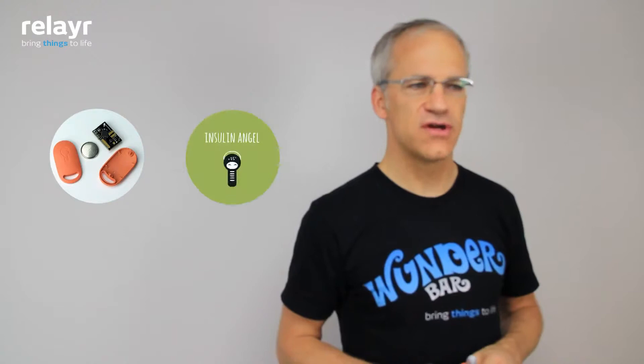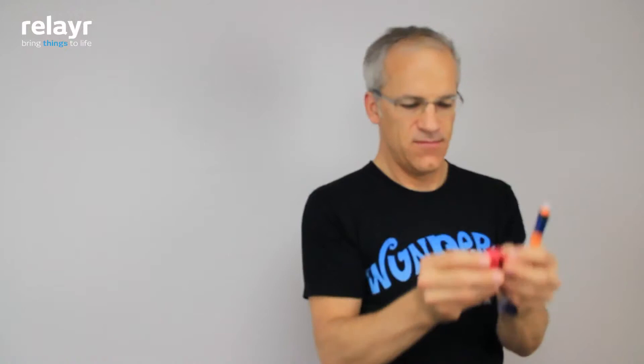So this gentleman who created this solution called Insulin Angel took a little sensor like this. He put it into his case, and it looks like that. That's his little Insulin Angel. It sits right next to the pens to measure the ambient temperature around the insulin. And if it starts getting too hot or too cold, it tells him on his phone. That's when it becomes valuable. That's when it becomes the Internet of Things.